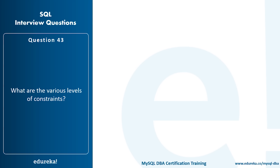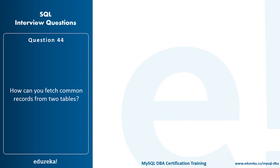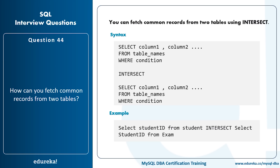What are the various levels of constraints? Constraints are representations applied to a column to enforce data integrity and consistency, and there are two levels: column-level constraints and table-level constraints. How can you fetch common records from two tables? You can use the INTERSECT statement. The syntax is: SELECT column1, column2 FROM table1 WHERE condition INTERSECT SELECT column1, column2 FROM table2 WHERE condition. For example: SELECT student_id FROM students INTERSECT SELECT student_id FROM exam.